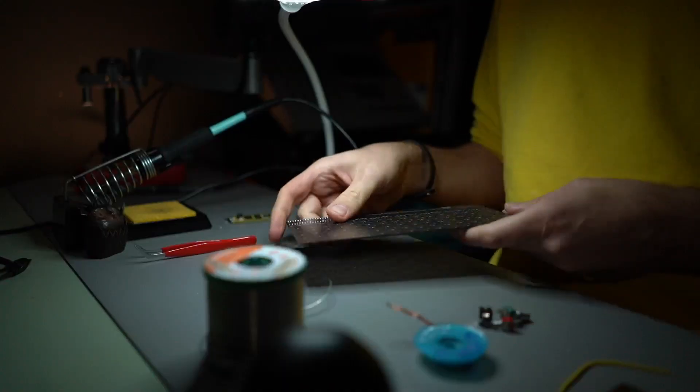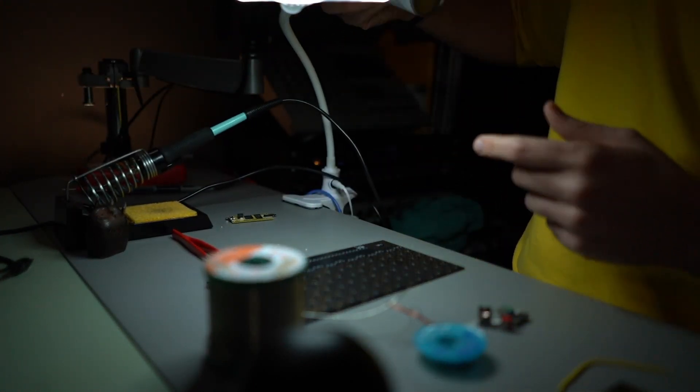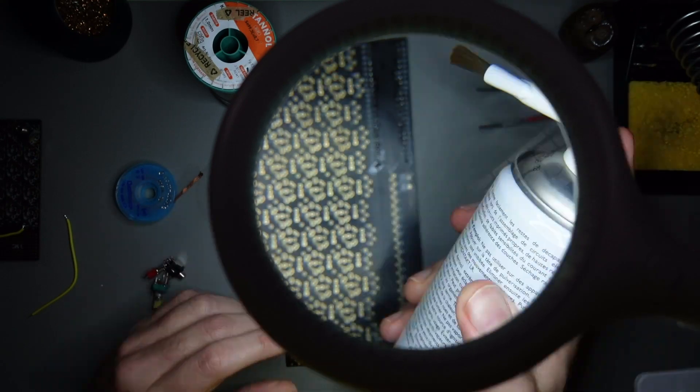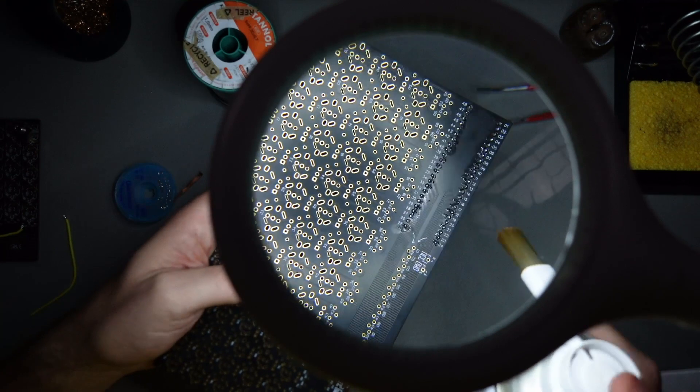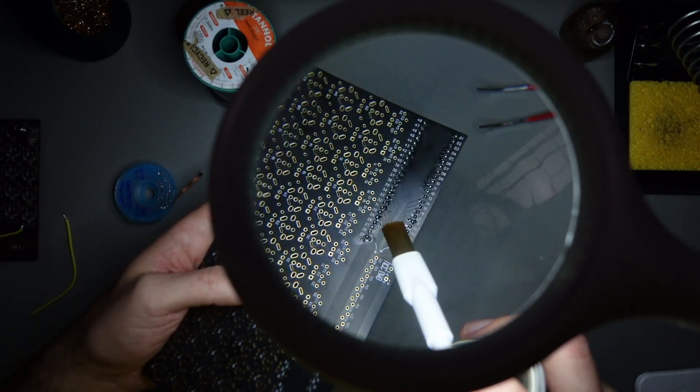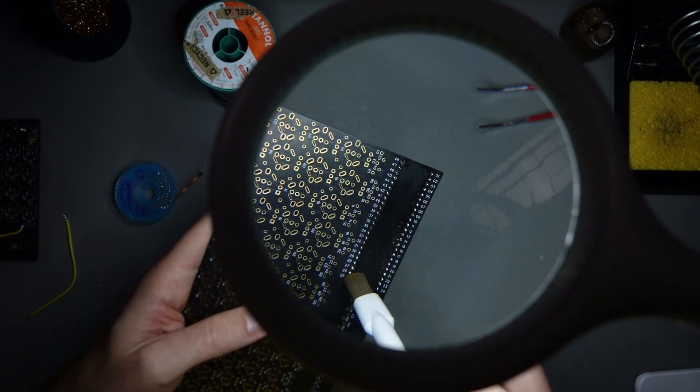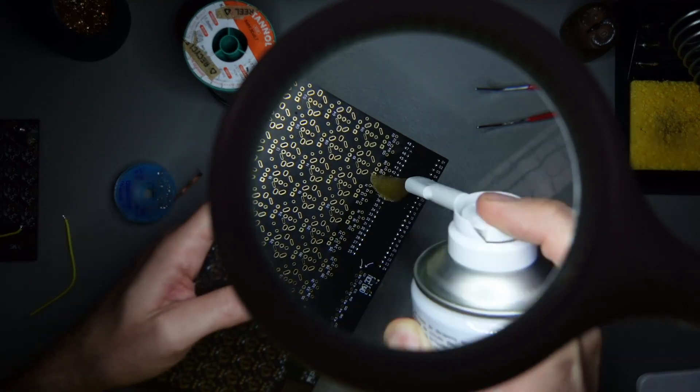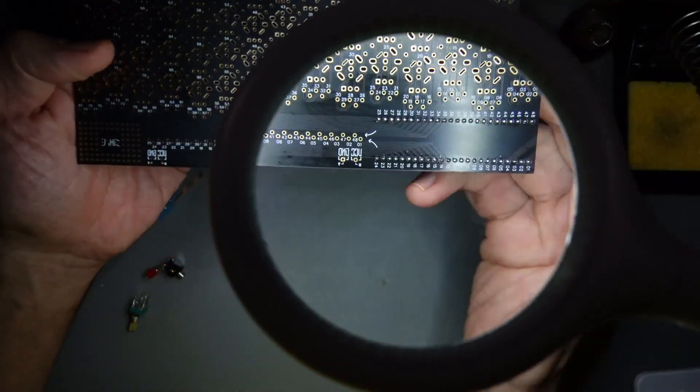And I'm gonna use a board cleaner here. It's not very mandatory. You don't really have to do it. But this is going to clean the flux that you're seeing here. So this is that rosin core that we talked about before. And if I just add a bit of this spray, I get now a nice and shiny board.